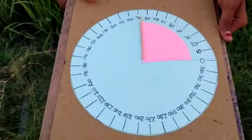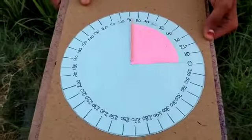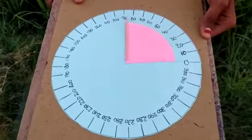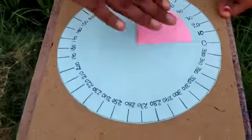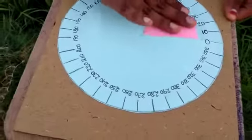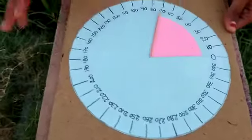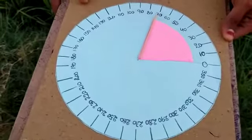I prepared a model to explain about types of angles. First one, acute angle. Acute angle means less than 90 degrees. This is acute angle.